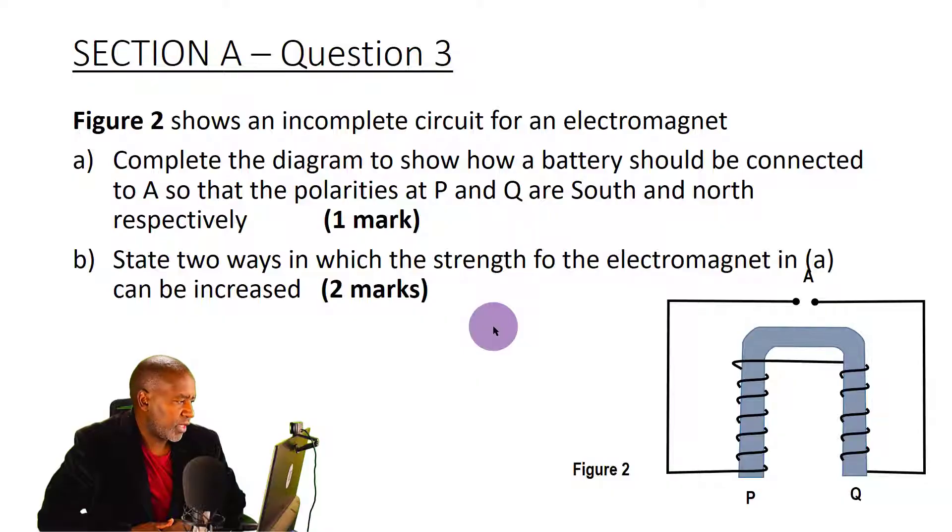So let's look at question 3. In question 3 we are asked, Figure 2 shows an incomplete circuit for an electromagnet. Complete the diagram to show how a battery should be connected to A so that the polarities of P and Q are south and north respectively.